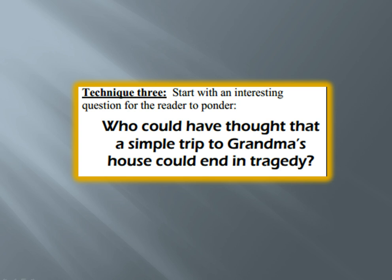Number three: start with an interesting question for the reader to ponder. Sometimes this one can be overused and seem very cliché, especially if you ask a rhetorical question. But sometimes it can work, especially if you approach it in a creative way, such as foreshadowing something that happens at the end and then jumping back to tell your story. The example here does that: 'Who could have thought that a simple trip to grandma's house could end in tragedy?' Instantly you're building suspense — people want to find out about the tragedy and how it relates to grandma's house, so they keep reading.